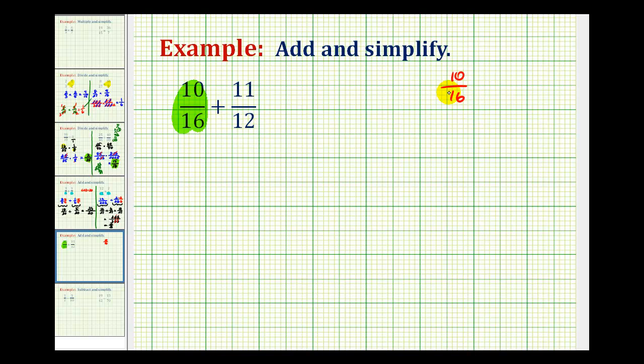So 10 and 16 have a common factor of two. This is going to simplify to 5 eighths. So let's rewrite this as 5 eighths plus 11 twelfths.